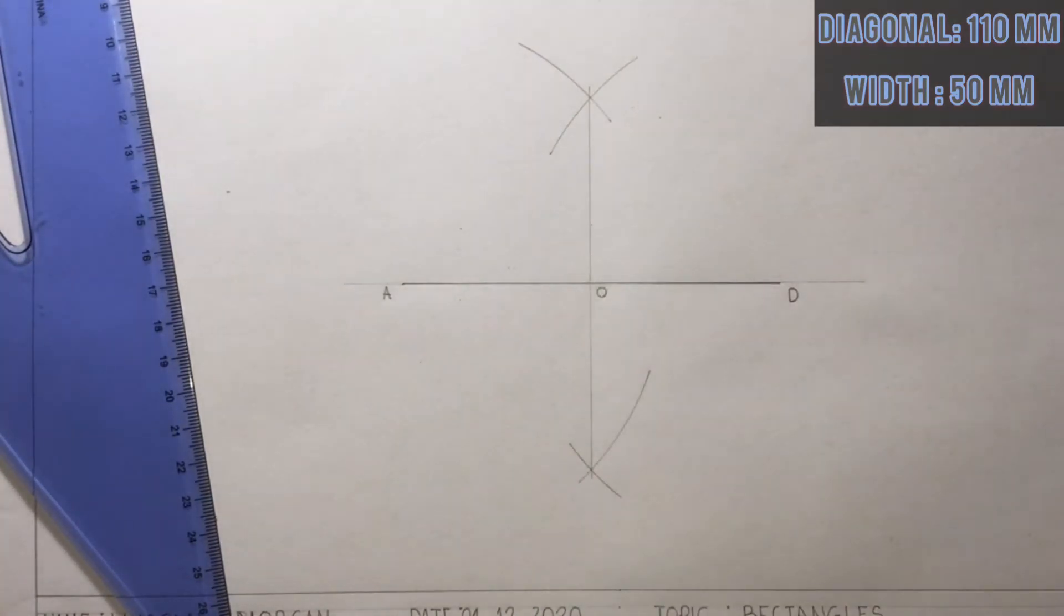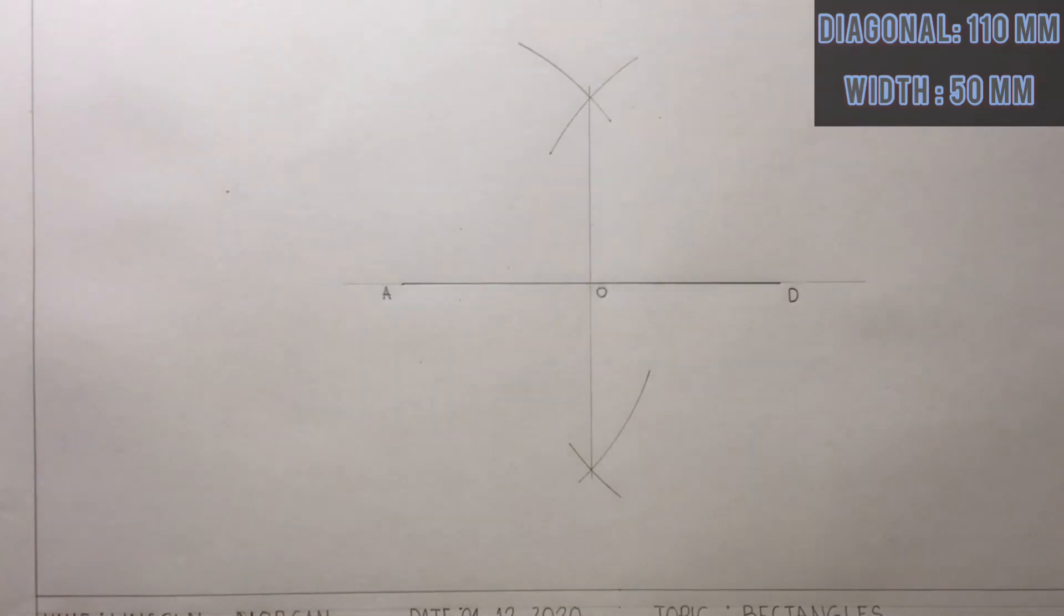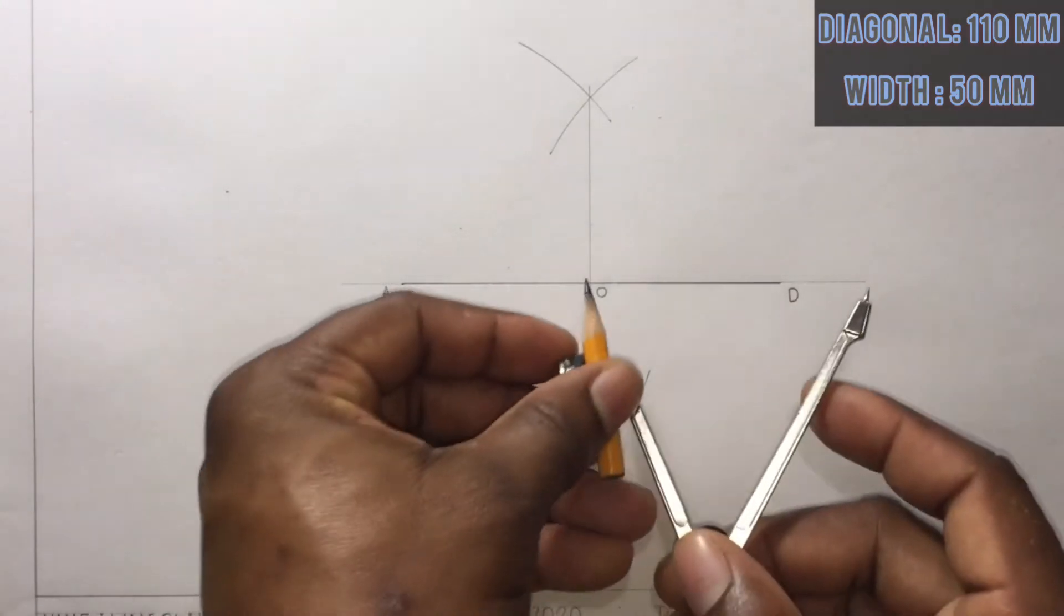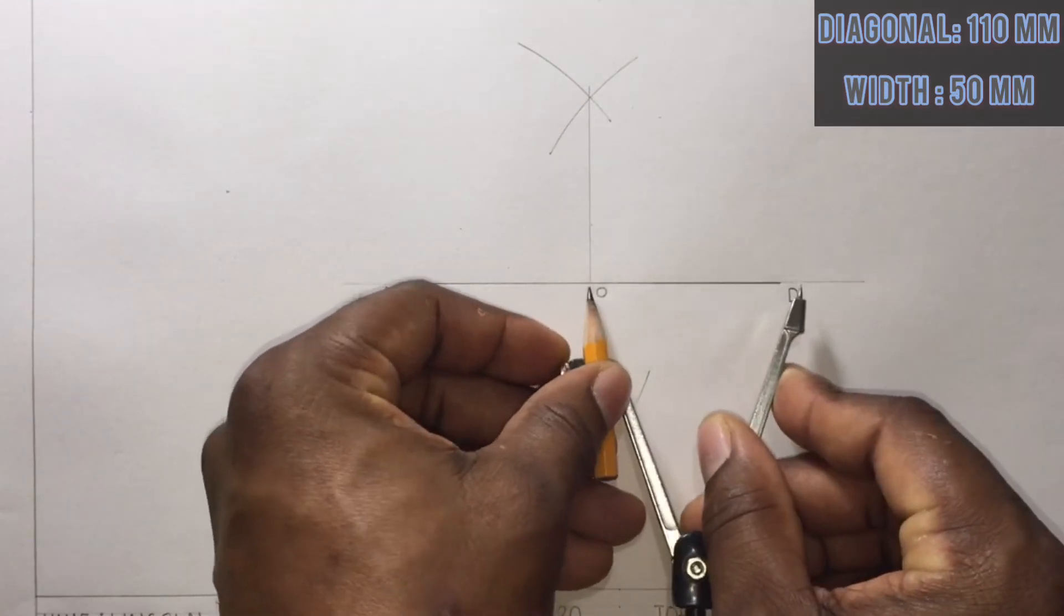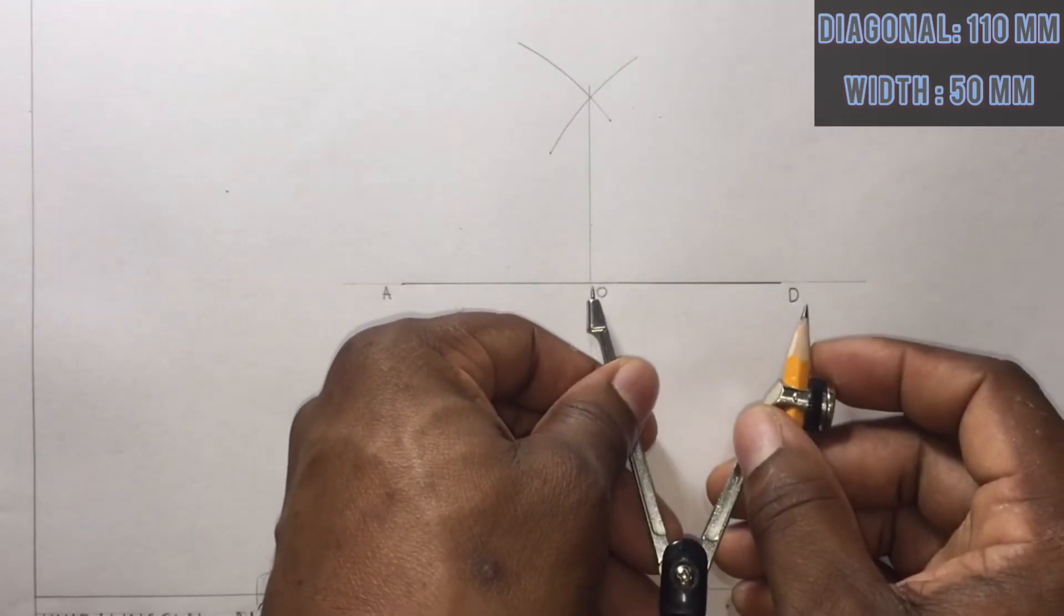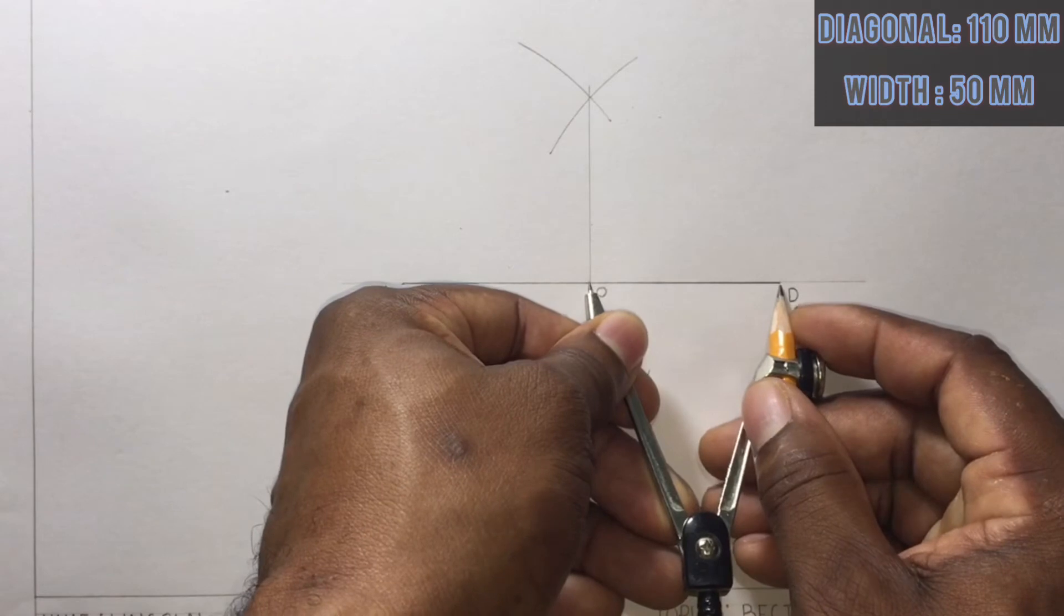Now that I've gotten point O, which is the center of my compass, I will open my compass from O to D or from O to A. I will draw my circle.